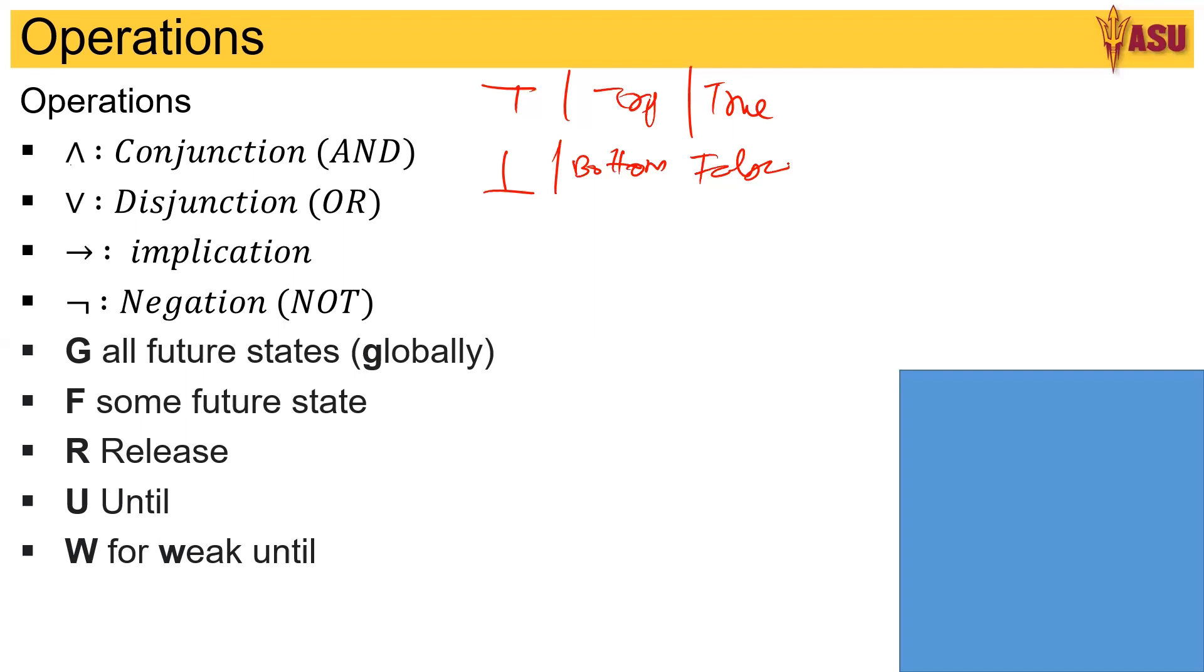Also, just a quick recollection of the binding. From least binding you have implication, then you have U, W, R. Then we have the unary operations which are X, F, G, and then we have NOT and brackets. These are the least to most binding operations in our set.